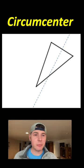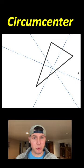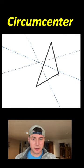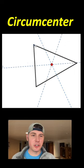If you take a triangle and then take the perpendicular bisectors of each side, all three of these will always intersect at the same point. No matter how you move the triangle around, they will always intersect at that same point, and that point is called the circumcenter.